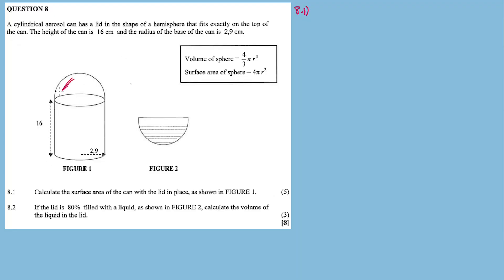We need the area for the hemisphere, the surface area for the hemisphere, and the surface area for the can or cylindrical shape. So our surface area equals the surface area of the hemisphere...